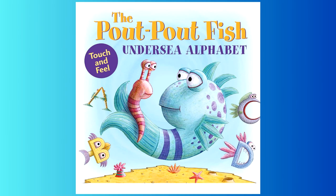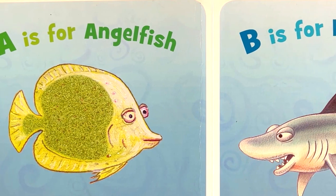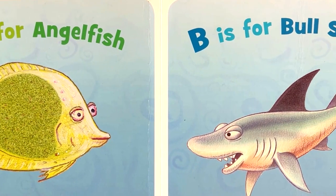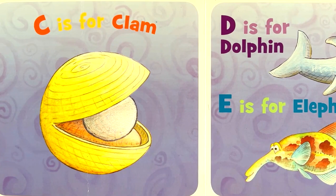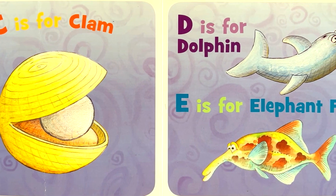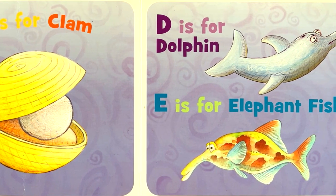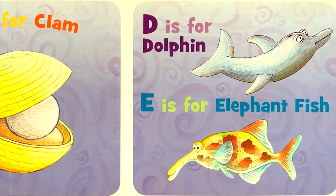The Pout-Pout Fish Under Sea Alphabet. A is for Angelfish. B is for Bull Shark. C is for Clam. D is for Dolphin. E is for Elephant Fish.